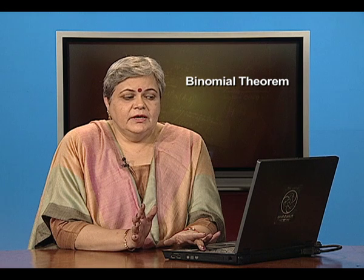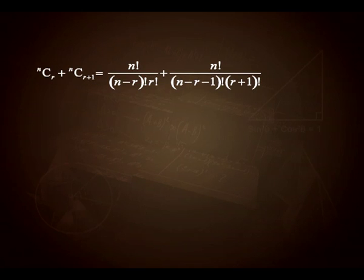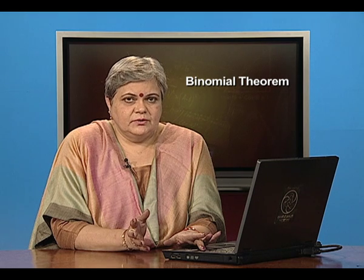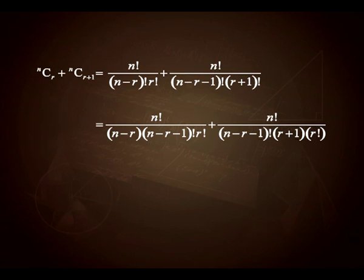To simplify, we take out common factors. Between (n−r)! and (n−r−1)!, the larger is (n−r)!, so I expand it as (n−r)·(n−r−1)!. Similarly, (r+1)! expands as (r+1)·r!. Once I have done this, common terms emerge: n!/[(n−r−1)!·r!] can be factored out, leaving the sum 1/(n−r) + 1/(r+1).